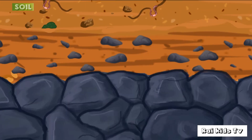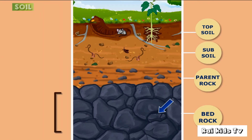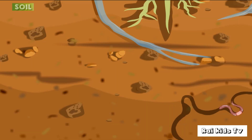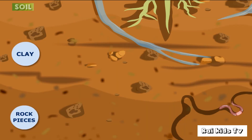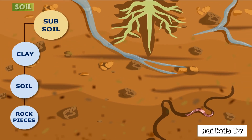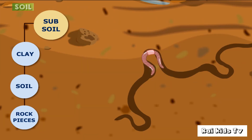Soil has several levels. At the bottom is solid rock. This layer is called bedrock. On top of it, the solid rock is breaking up. This is parent material — it has broken pieces of the parent rock. The next level has rock pieces, clay and soil. It is subsoil. Deep plant roots come to this layer of soil looking for water. Earthworms can be seen here.